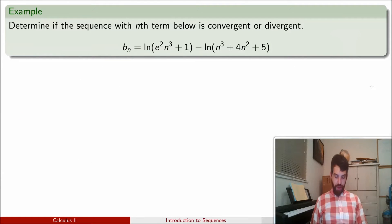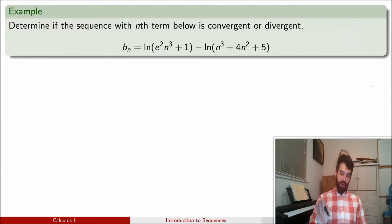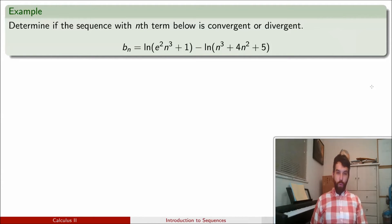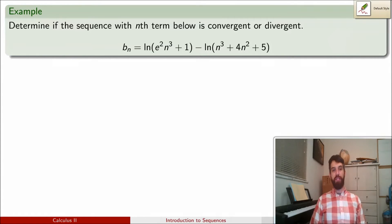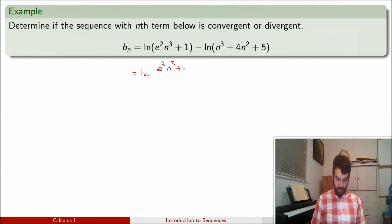Take for example this sequence b_n, which looks like a ridiculous mess. We want to prove that it converges to some value. We'll do some algebra and use log rules to clean it up, then apply those rules. First, I note this is a difference of two logs, so by the log rule, this is the limit of the quotient: (e² n³ + 1) divided by (n³ + 4n² + 5).